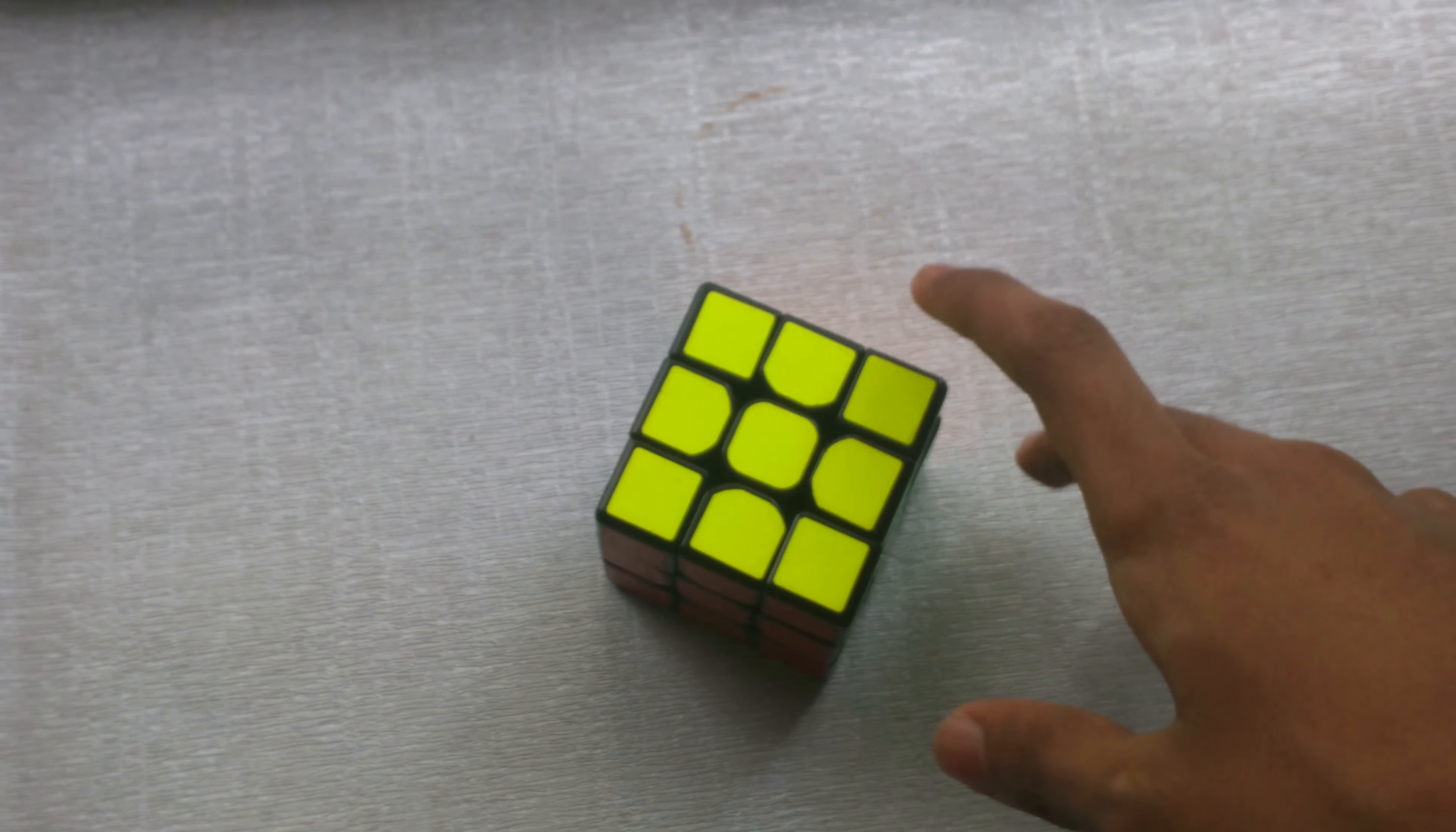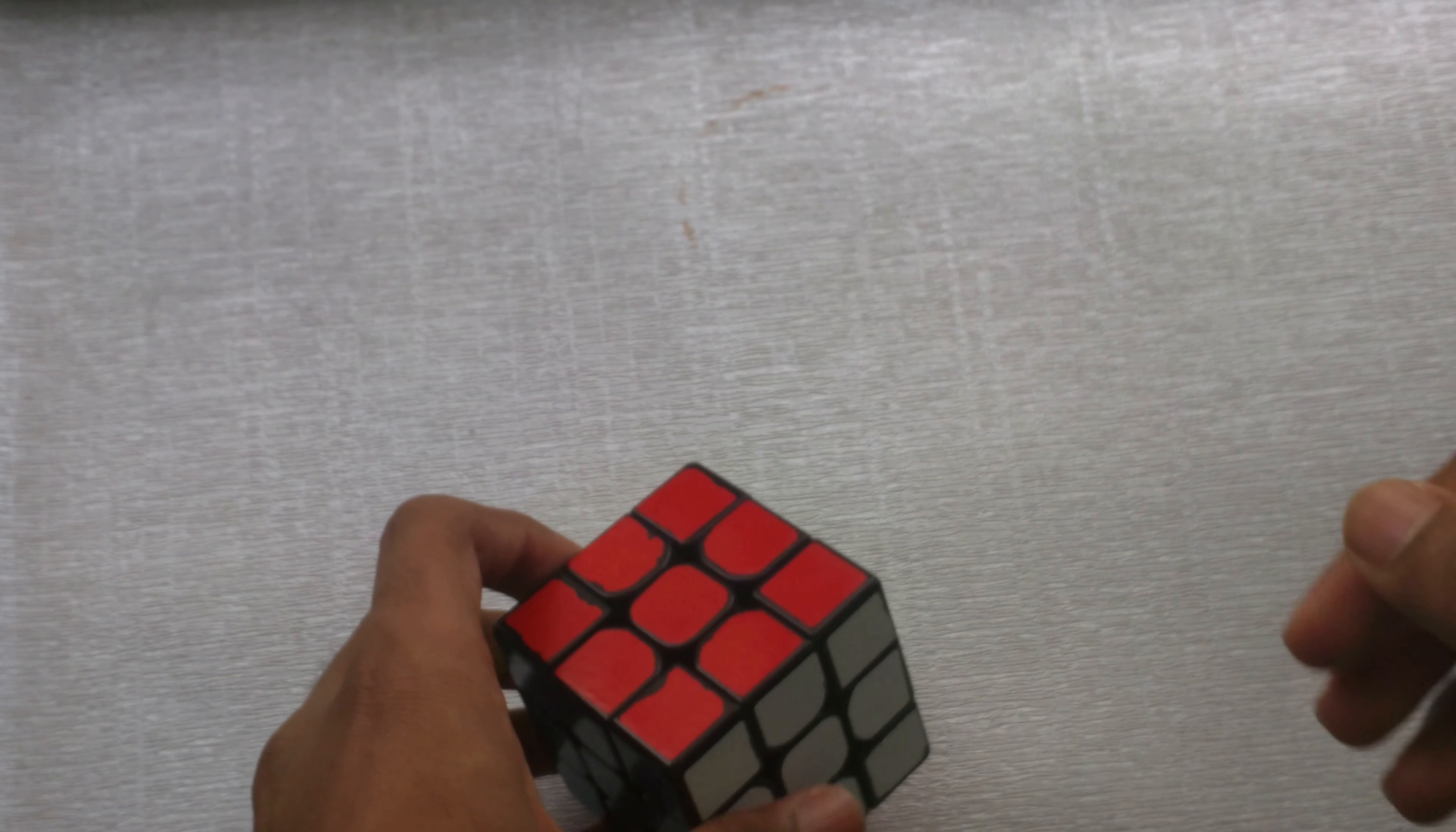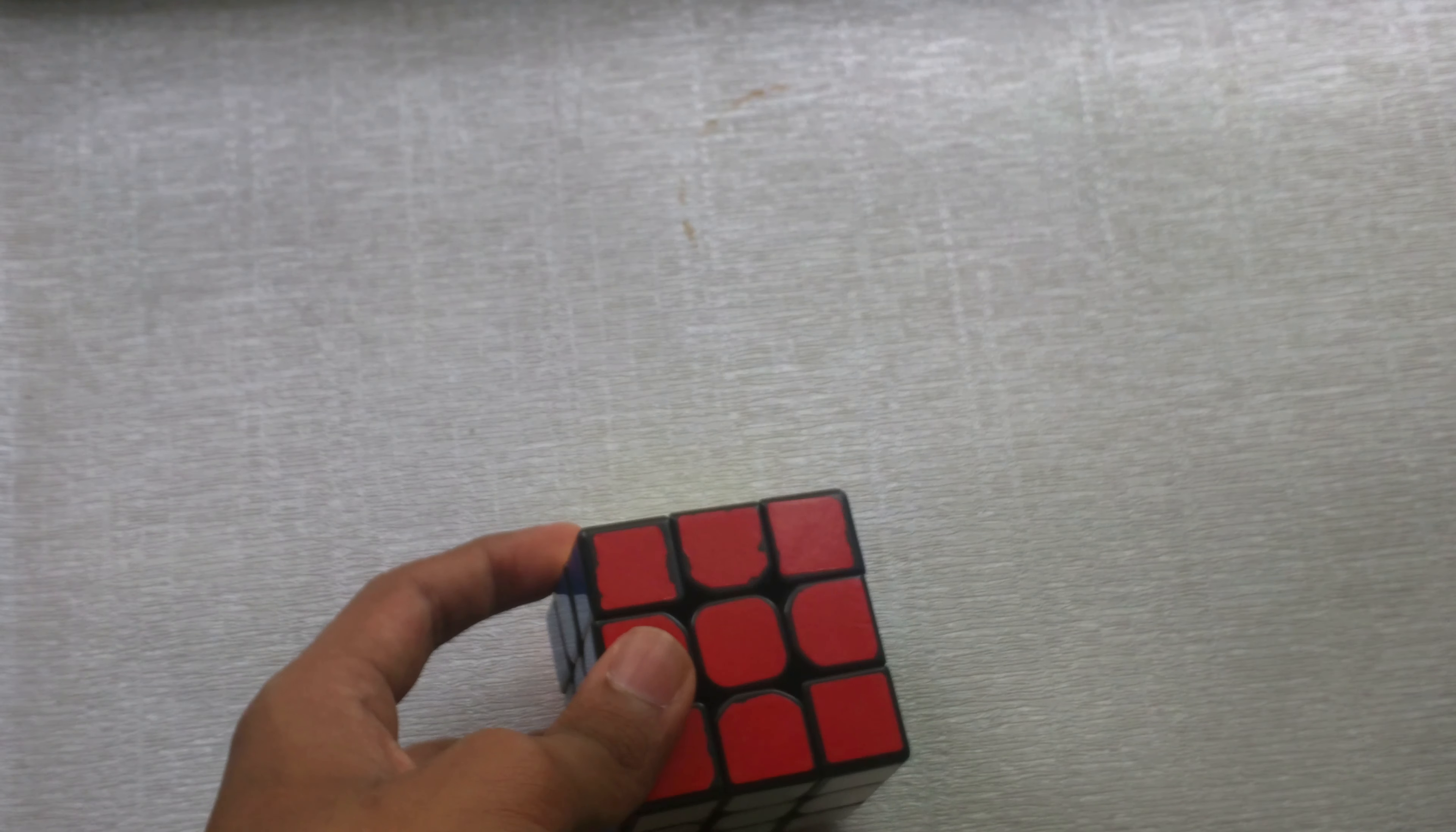So the cross is pretty straightforward, it's just a white plus sign on the bottom or any color you want basically. And then there is the F2L or the front two layers, which is a little bit different than the beginner's method and it's faster as well.